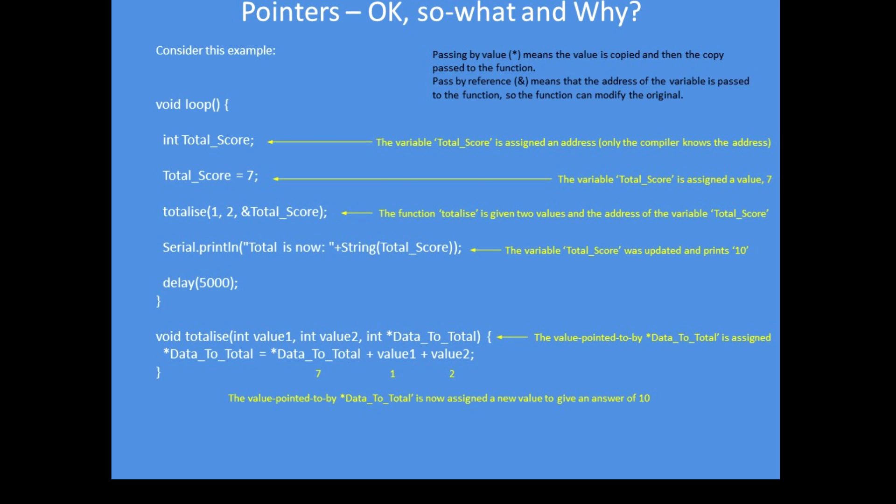Now *data_to_total is pointing at the variable table address holding total_score. Reading the next line in plain English: the value pointed to by data_to_total equals the value pointed to by data_to_total — which was passed over with the value 7 — plus value_one plus value_two. So the total is 10, and indeed when you run the program that's what gets printed out. It's passing over the address of a variable, then using and writing back the actual value to that address.